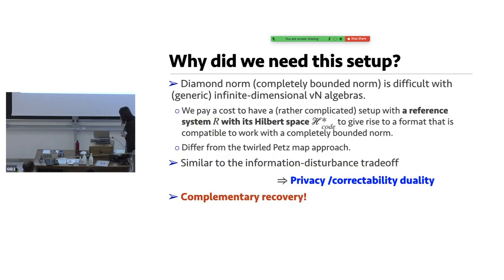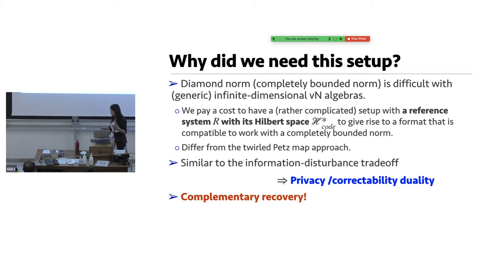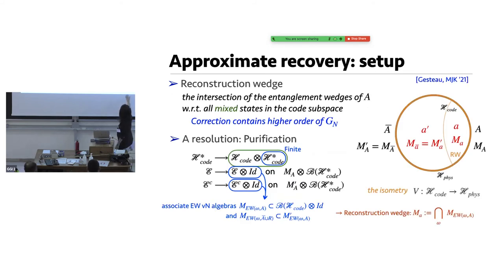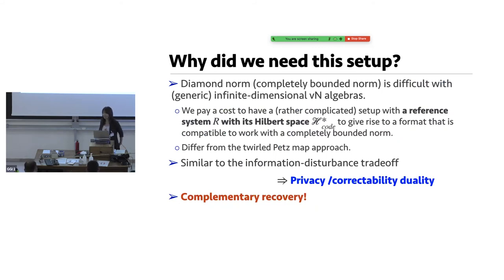What's the cost we're really paying is that we now have a reference system R that's dealing with this doubly-copied large finite H code star. That format is going to make it difficult to work with the system to give rise to something that cannot be prepared to give rise to a completely bounded norm in the end. This requires us to work with a different type of system, and the information disturbance trade-off is no longer really possible as taking a supremum with this explicit norm — it's very difficult. So we're going to take something similar but different called a privacy-correctability duality. This is in the context of complementary recovery. After all of this with the reference system, we're going to do the complement part as a complementary recovery — we're going to chuck out that system and then have the recovery there, so in turn you can have the other side through the privacy-correctability duality.